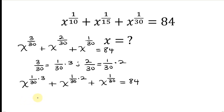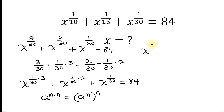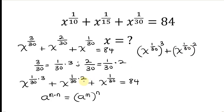From indices, we know that a to the m times n is the same as a to the m, raised to the n. We are going to write these terms in that form. So this becomes x to the 1 over 30, raised to the 3, plus x to the 1 over 30, raised to the 2, plus x to the 1 over 30, and this is equal to 84.